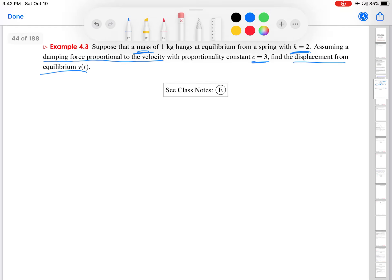So let's identify all of those parameters. We've got the M value right here, 1 kilogram, the C value, 3, and the K value, 2. So using our model, MY double prime plus CY prime plus KY equals 0, this turns into Y double prime, because M is 1, plus 3Y prime plus 2Y equals 0.